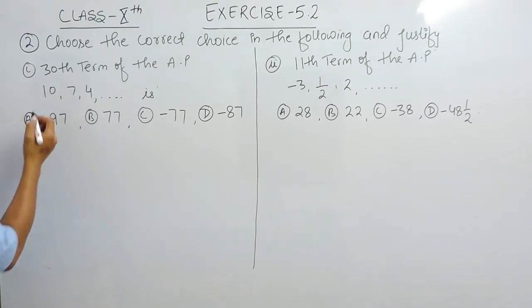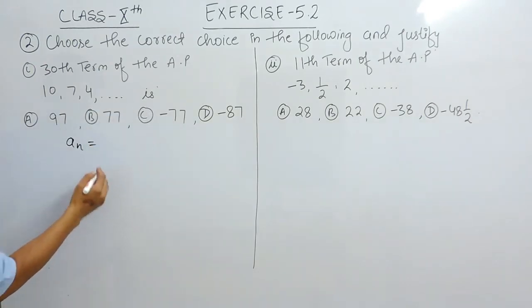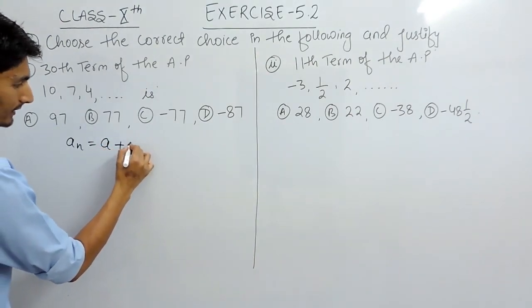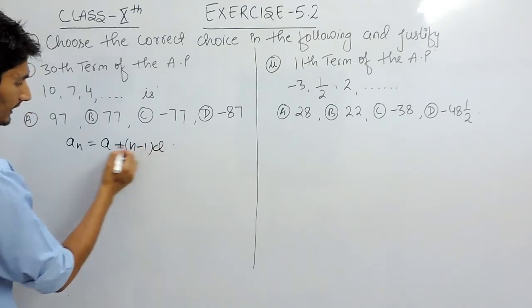We know that when we have to find any term of any AP, we have the formula which says the nth term—the term you have to find, or the last term of AP—is given by a + (n-1)d.